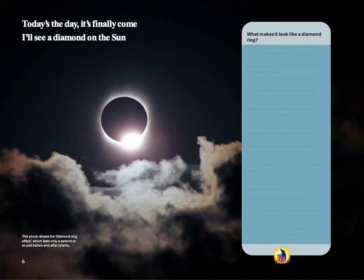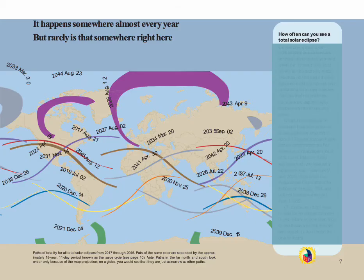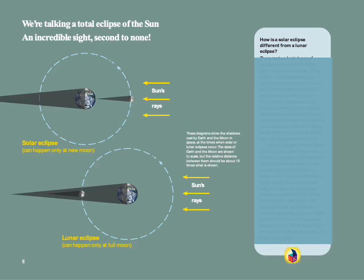The book imagines that today is the day that you will see a total solar eclipse. Today's the day, it's finally come, I'll see a diamond on the sun. It happens somewhere almost every year, but rarely is that somewhere right here. We're talking a total eclipse of the sun, an incredible sight, second to none.